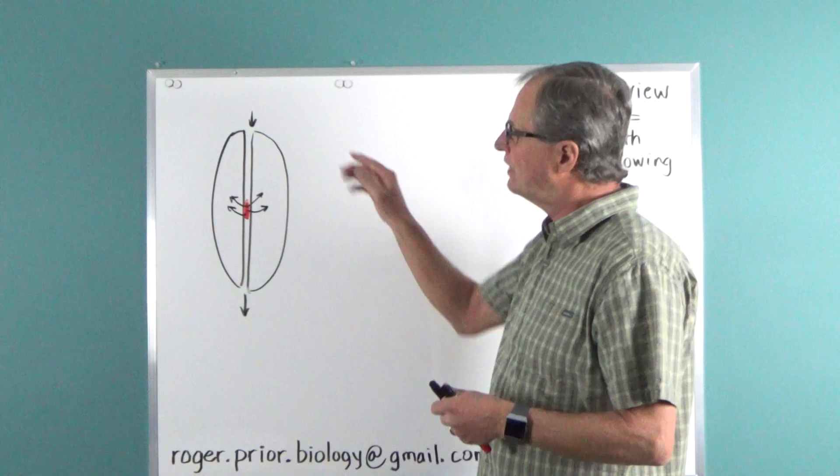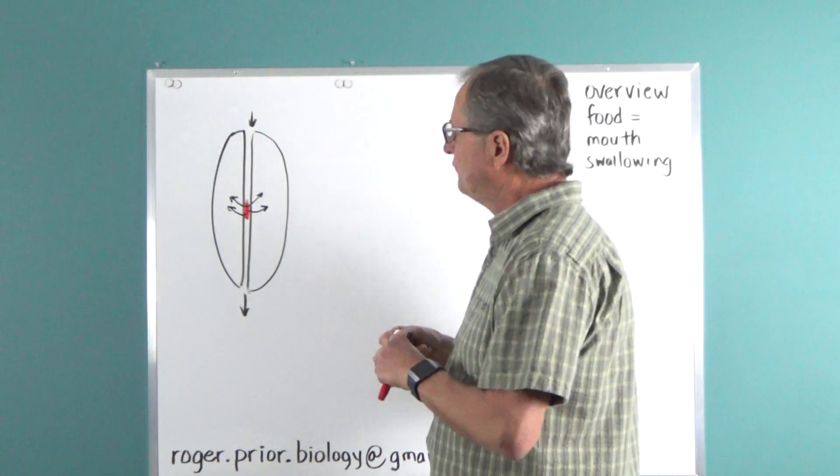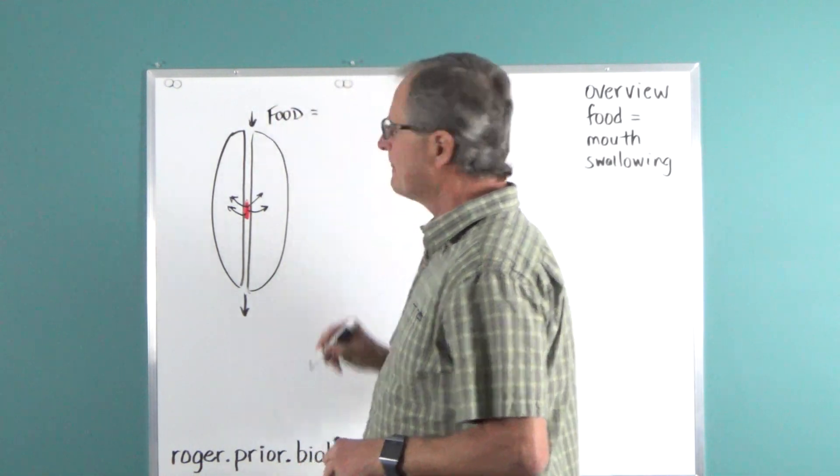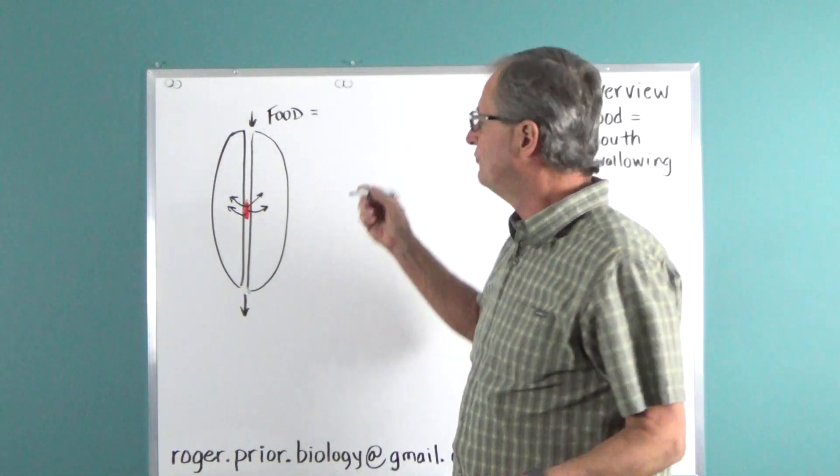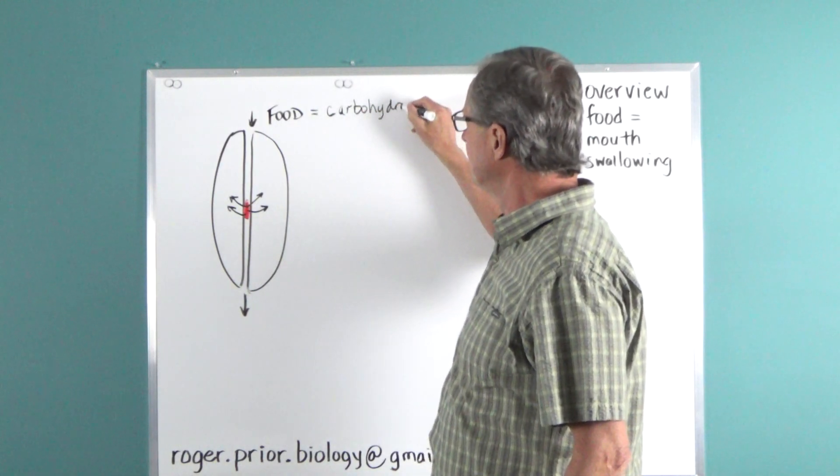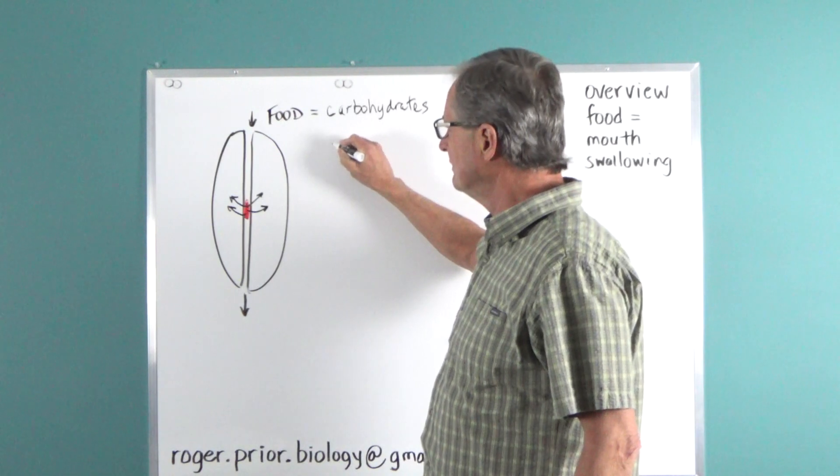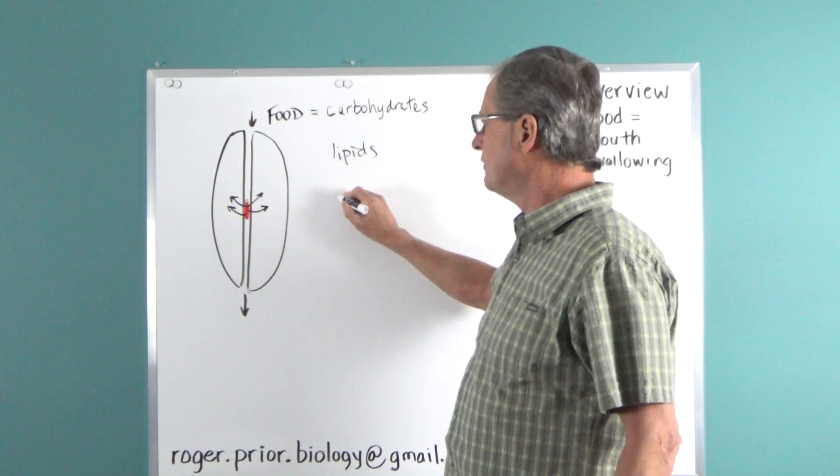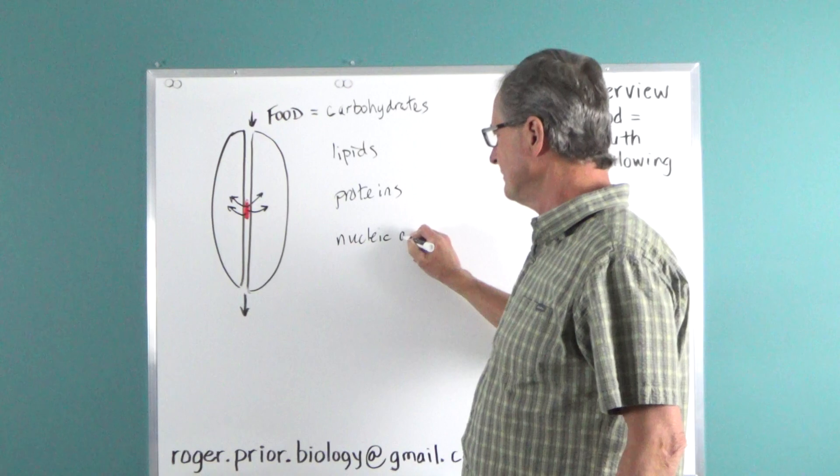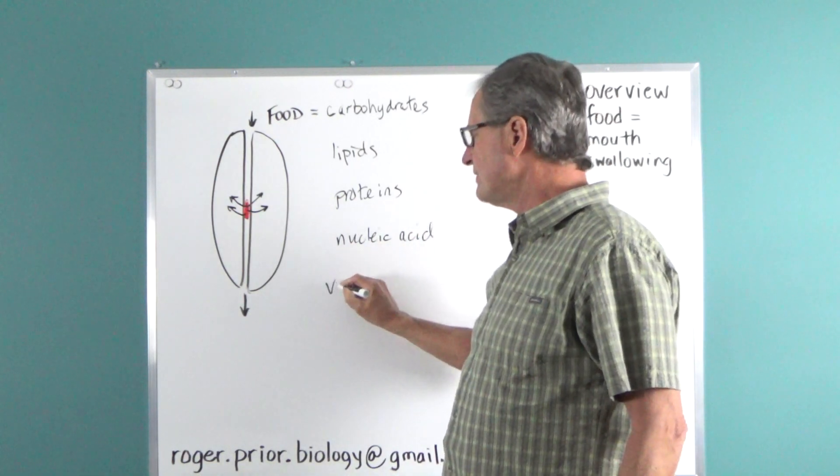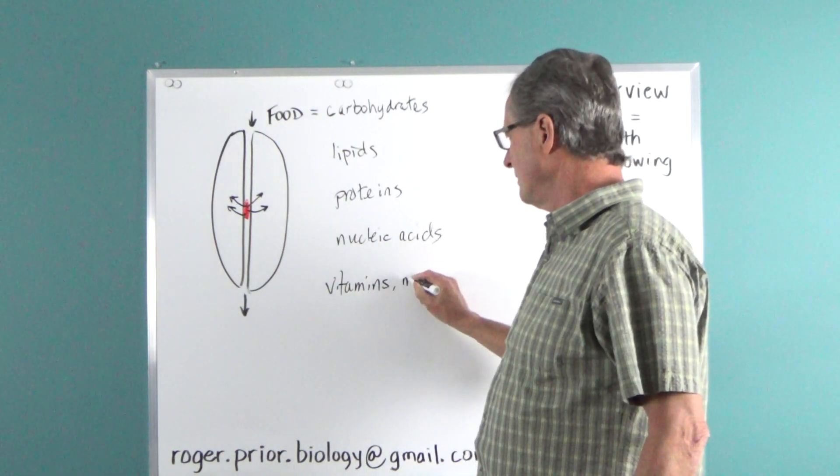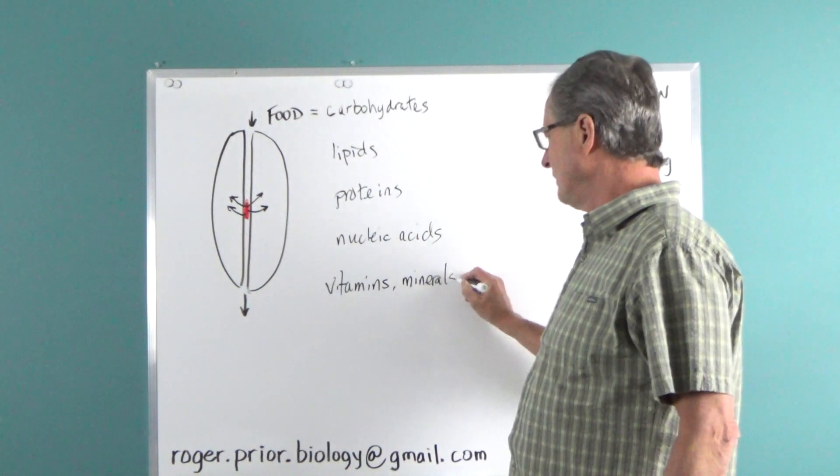Secondly, I'd like to consider what's in the food itself. If we look at food biochemically and consider the components of it, food is made out of carbohydrates, lipids, proteins, nucleic acids, vitamins, minerals, and water.